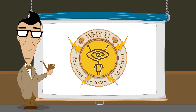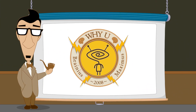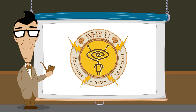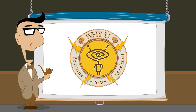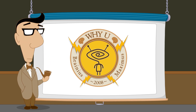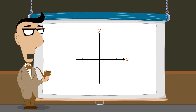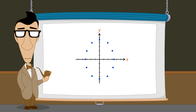Hello, I'm Professor Von Schmohawk and welcome to Why U. We have seen how ordered pairs can be graphically represented as points in a plane using Cartesian coordinates. As we will see later in this lecture, this set of ordered pairs is an example of a binary relation.